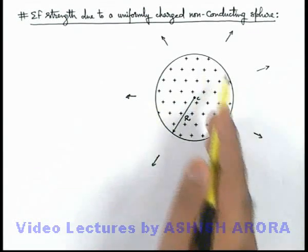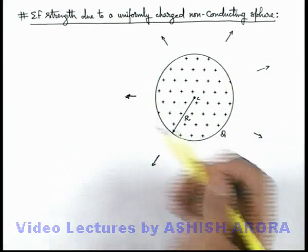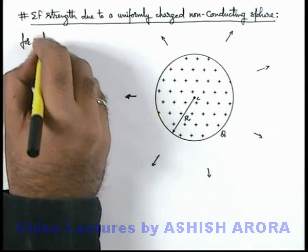We can treat the whole charge as if it appears to be concentrated at its center for the outside region. So we can directly write for the outside region.